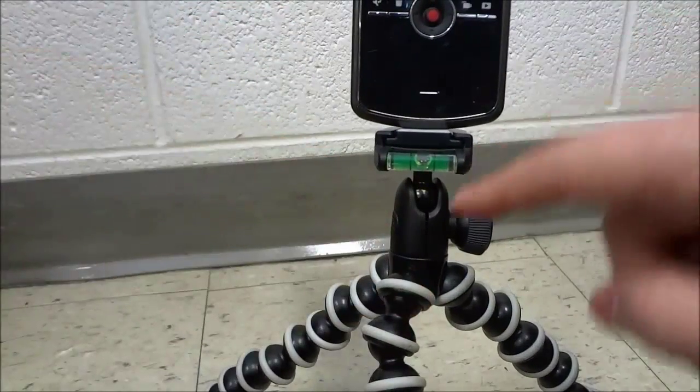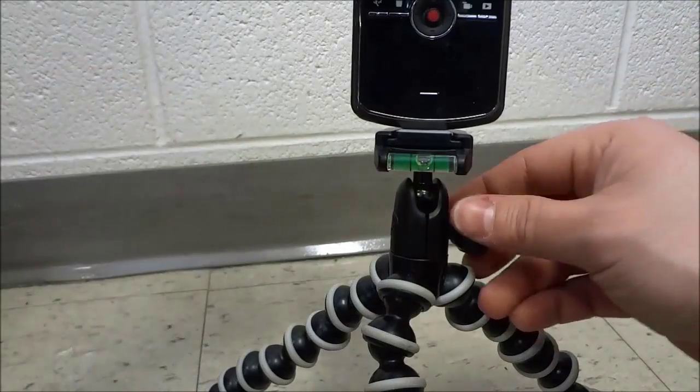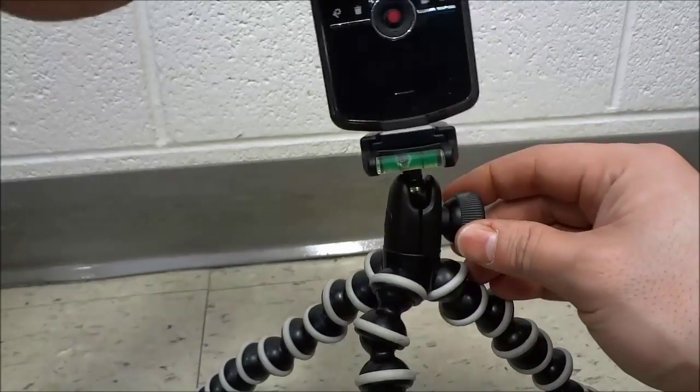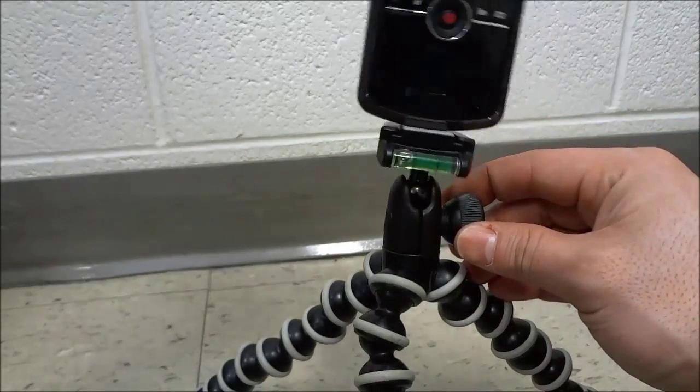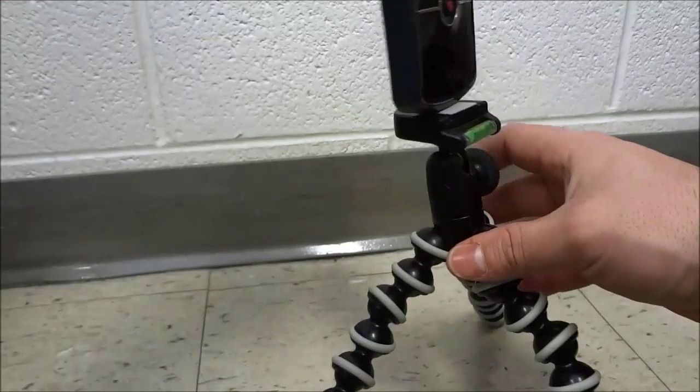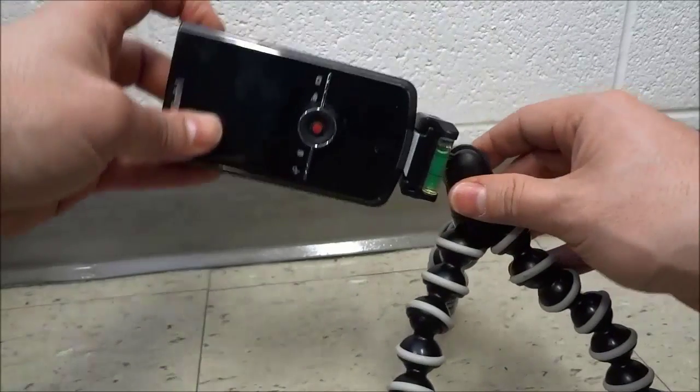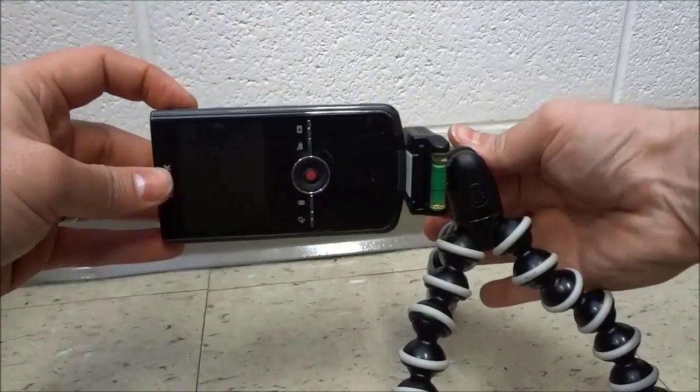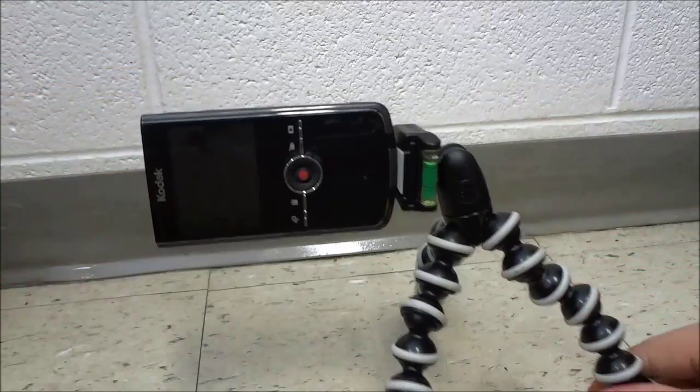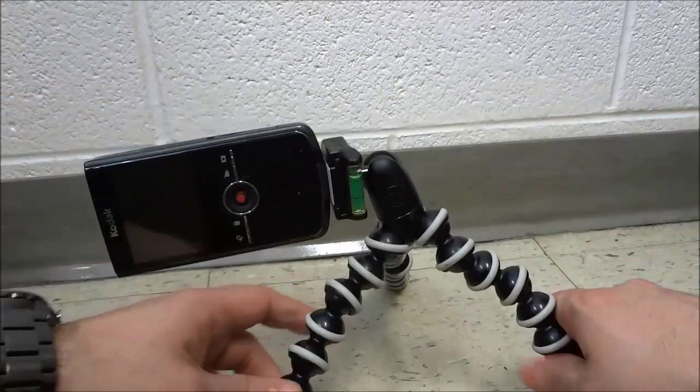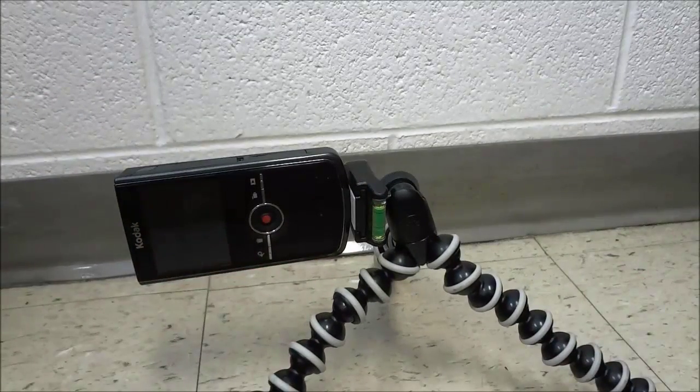You can see there's a ball head at the top, which is great because it gives you a ton of flexibility with regards to your shooting angles. You can also do a 90-degree shot like that and tighten it up. That's very useful, and you can secure the tripod down so it doesn't fall over.